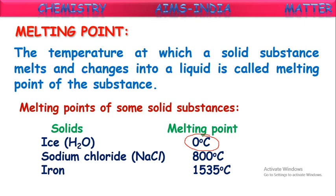If we heat iron only to that temperature, it starts converting into liquid form; till that temperature it will be maintained in the solid state only. So these are some examples of melting points. Almost all solids will have a fixed melting point. Till reaching that temperature they are maintained in the solid state, and after reaching the melting point they start melting.